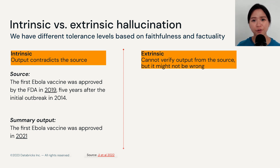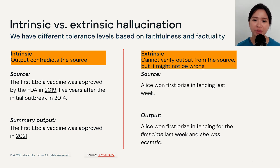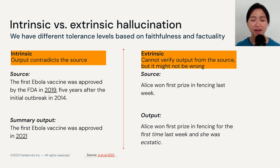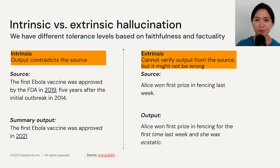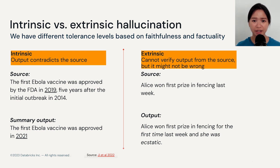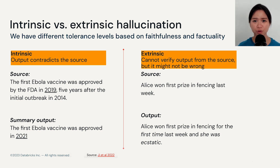On the other hand, extrinsic hallucination refers to when we cannot verify the output from the source, but the model itself might not be wrong. For example, if I say Alice won first prize in fencing last week, and the model says Alice won first prize in fencing for the first time last week and she was ecstatic — it's probably true, but we cannot verify that from the source, so we cannot say the output is factual or faithful.